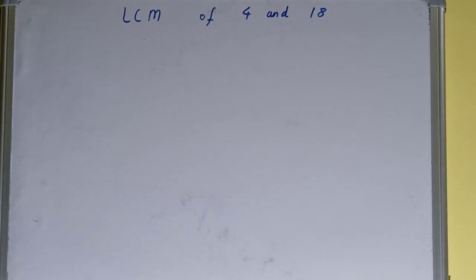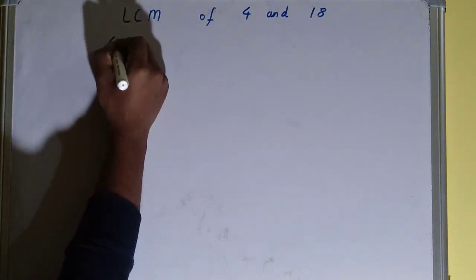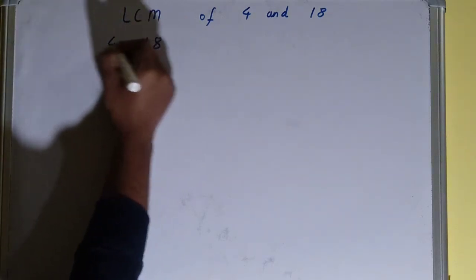Hello friends, and in this video I will be helping you with the LCM of the numbers 4 and 18. So let's start. To find it out, you first need to write both the numbers like this: 4 comma